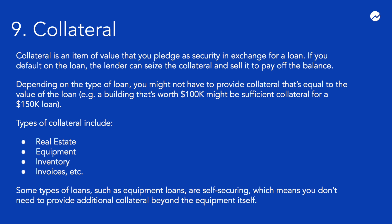Our next business finance term, collateral, is closely related to personal guarantees. Like a personal guarantee, collateral provides some security for the lender if your business is unable to pay back a loan. Collateral is an item of value, such as a piece of equipment or inventory, that you pledge in exchange for a business loan. If your business defaults on the loan, the lender can sell off the item to recover the balance.